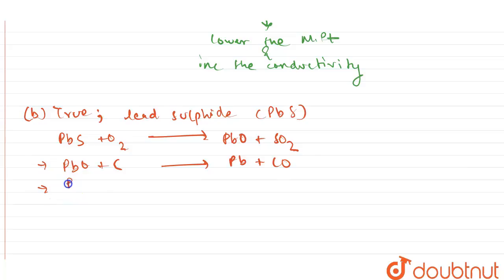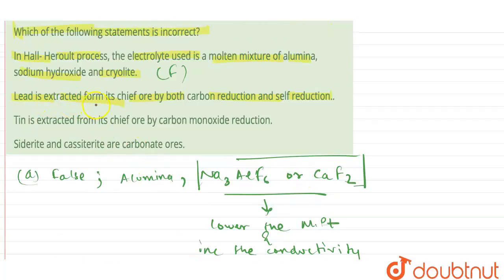And then there is one more thing which is happening, which is self-reduction. That is PbO with PbS will form lead plus sulfur dioxide. So if you see the statement, lead is extracted from its chief ore by both carbon reduction—carbon reduction we have seen—and also self-reduction. So the PbO which is formed undergoes reduction with PbS to give lead plus sulfur dioxide.